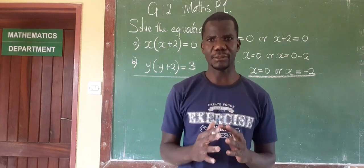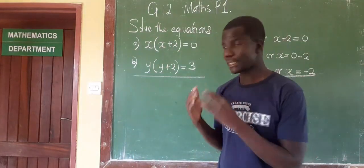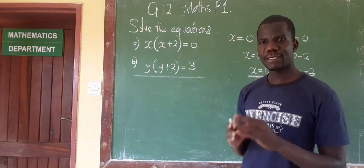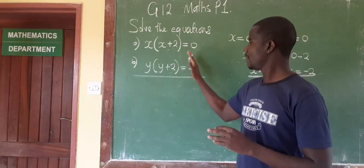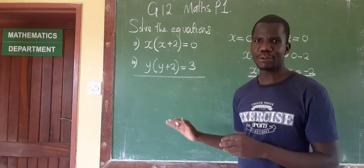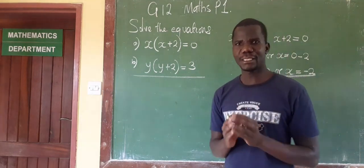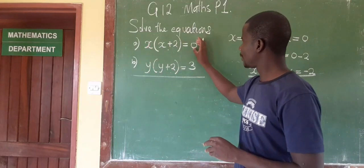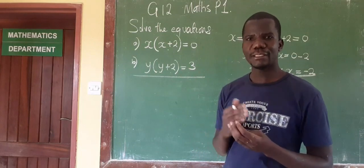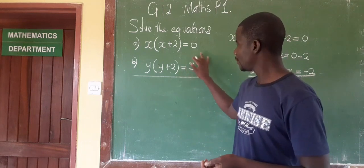Now we look at the second question. I hope you are paying attention. One of you will be tempted — and I actually advise that even before I do the second one with you, you pause the video and attempt the question, so you can compare. I'm sure someone is already thinking: since we equated each factor to zero in the first one, here we also say y equals 3. But no — that is not what we are supposed to do. This is because the number on the right-hand side here is 3, not zero.